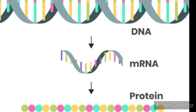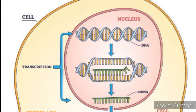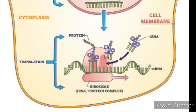Three Stages of Translation: Translation, the process carried out by ribosomes, occurs in three main stages — initiation, elongation, and termination. Each stage involves specific interactions between mRNA, transfer RNA (tRNA), ribosomal subunits, and amino acids to build the protein chain.